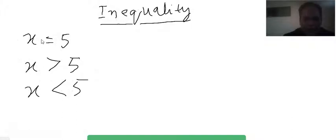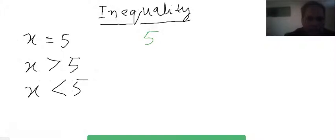An equation — that is, an equality — always has a single solution. Right now that solution is five. If you put five in for x, then five will be equal to five, which confirms it is the solution of this equation.